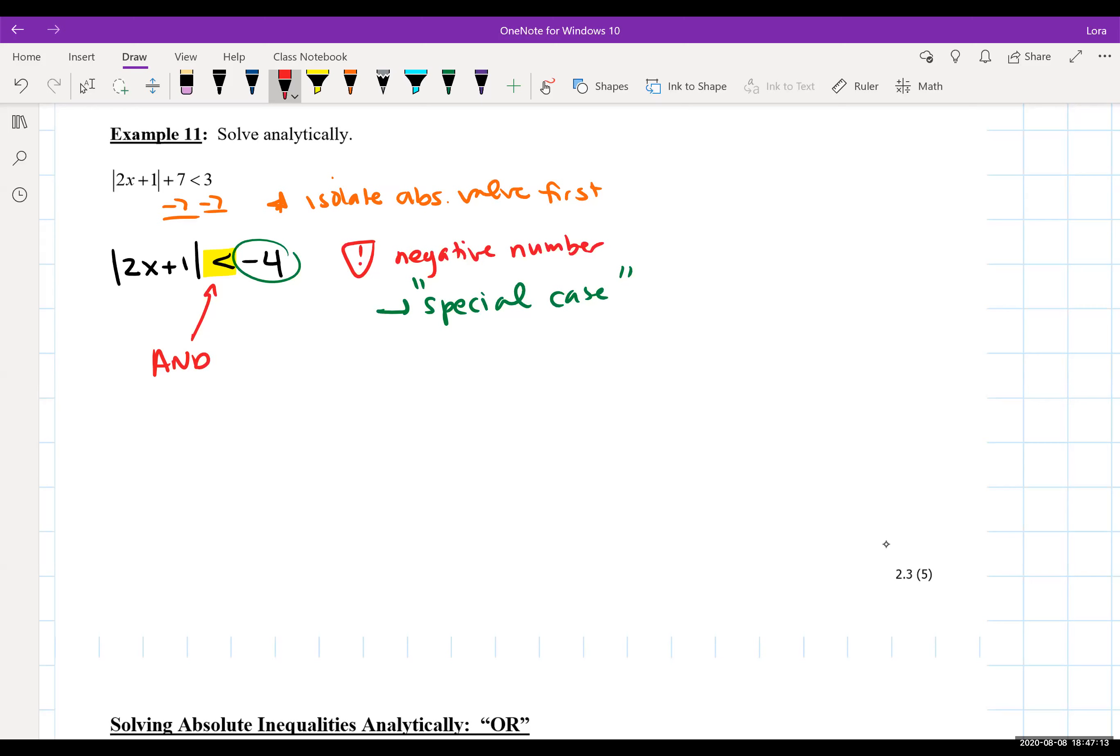So once I figure out it's an and case, even if I didn't realize it was a negative number, I could approach this the same way where I am splitting everything up into two cases. Case one, being that you're dropping the bars, everything else is the same, using the connector word and.